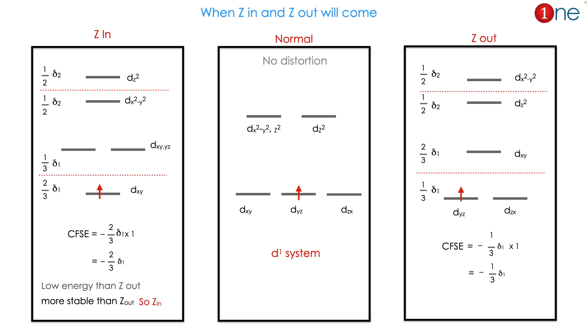Which will dominate, Z_in or Z_out? Simply find the CFSE in Z_in and Z_out. If you find Z_in, CFSE will be -2/3 Δ1. If you find Z_out, you will see -1/3 Δ1. The lower will be -2/3, which is lower energy and more stable, so Z_in occurs in the d¹ system.